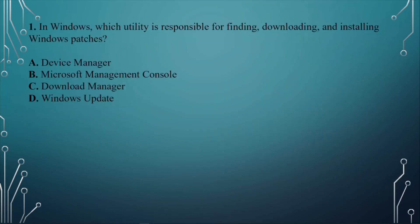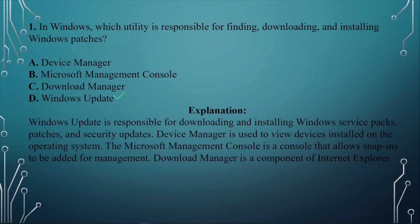Question number one: In Windows, which utility is responsible for finding, downloading, and installing Windows patches? A. Device Manager. B. Microsoft Management Console. C. Download Manager. D. Windows Update. The answer is D, Windows Update. Windows Update is responsible for downloading and installing Windows service packs, patches, and security updates. Device Manager is used to view devices installed on the OS, and the Microsoft Management Console allows snap-ins to be added for management.